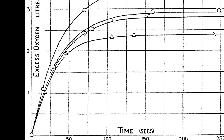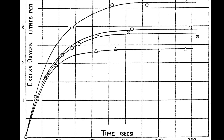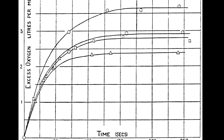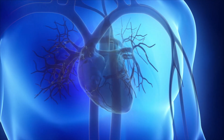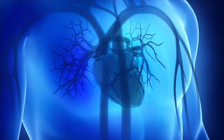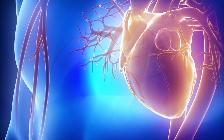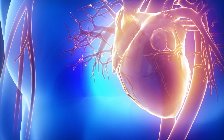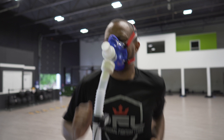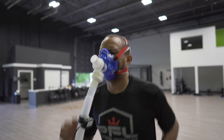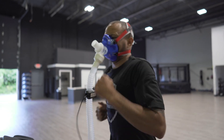Hill found that there is an upper limit on an individual's ability to take in and consume oxygen, and that maximum cardiac output was an important determinant of VO2 max. These are concepts of VO2 max that are still universally accepted today in exercise physiology.